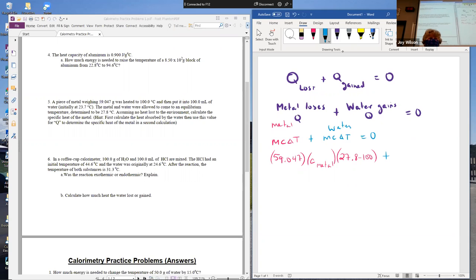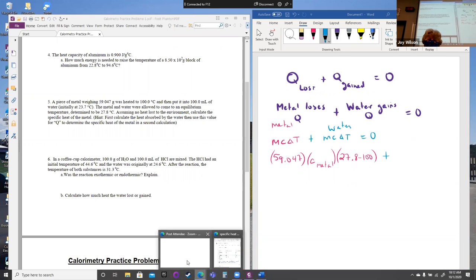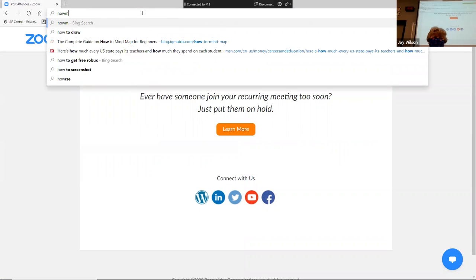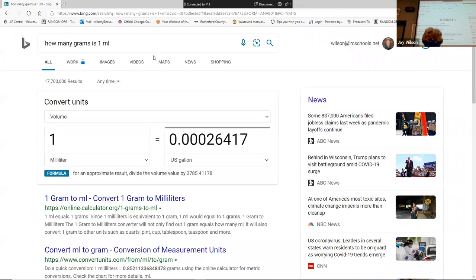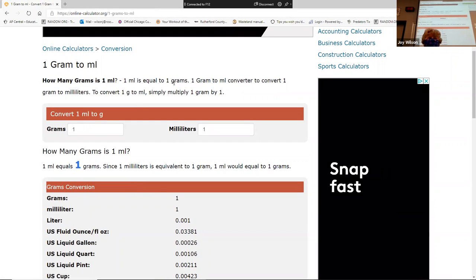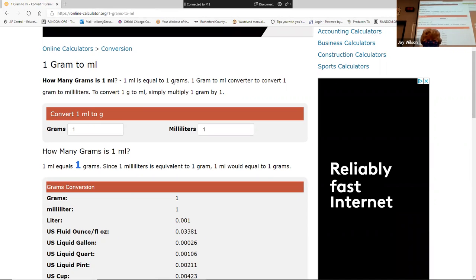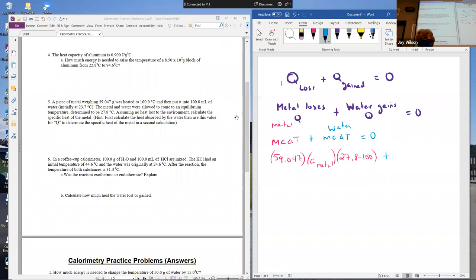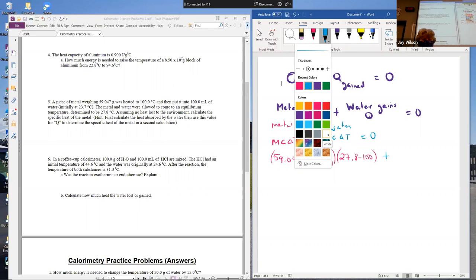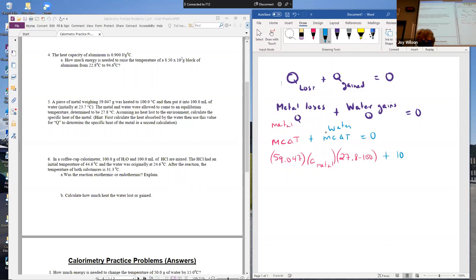So how many grams is one milliliter? Hey, look. One milliliter is equal to one gram. Yay! One of the few times that unit conversion works out. So grams and milliliters are the same thing. Forever. Isn't that awesome, though? Okay, so what do we do with the water? We have 100 milliliters, so that really means we have 100 grams of water is 100 milliliters.